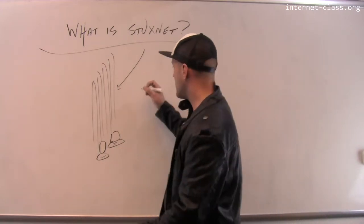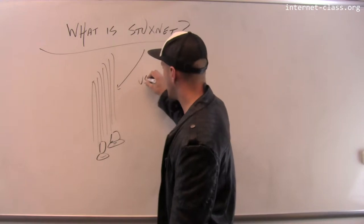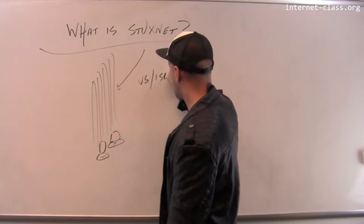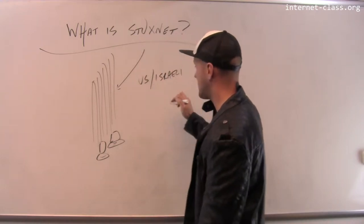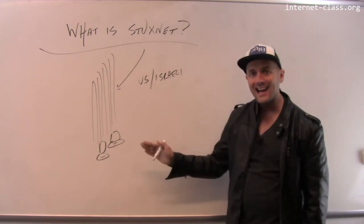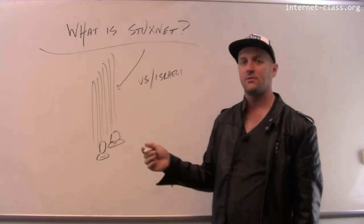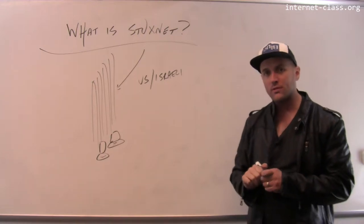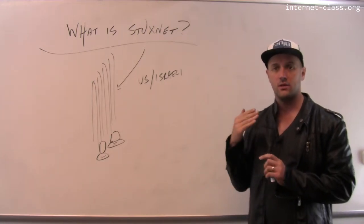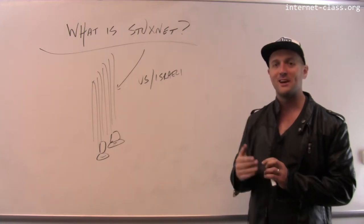And the story is that this was a joint US-Israeli cyber weapon. So working together, these two governments developed a piece of code that would attack the computers that were operating these centrifuges. And the goal was to disrupt Iran's uranium enrichment program.